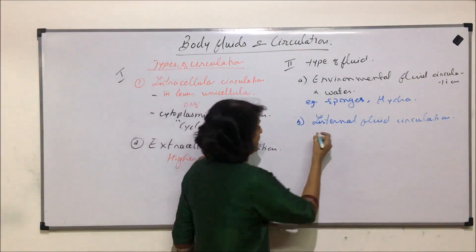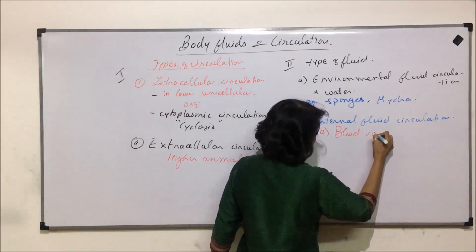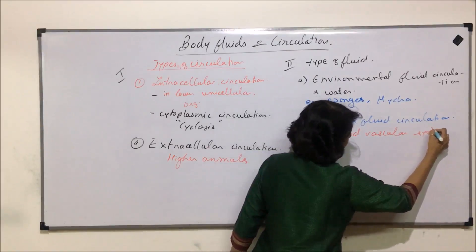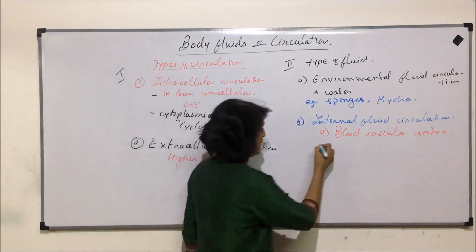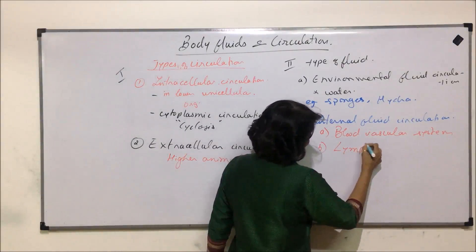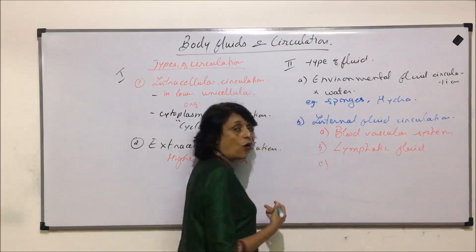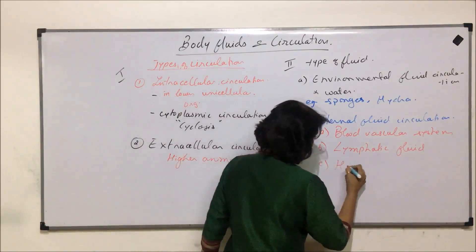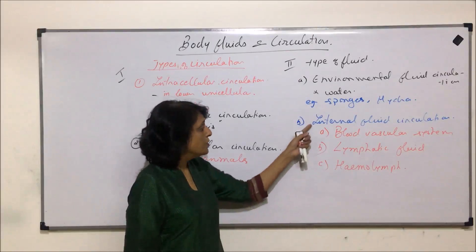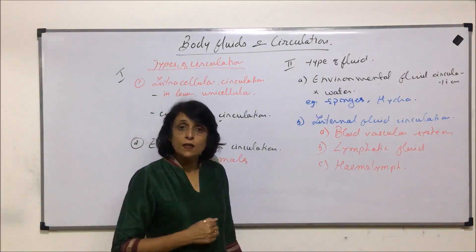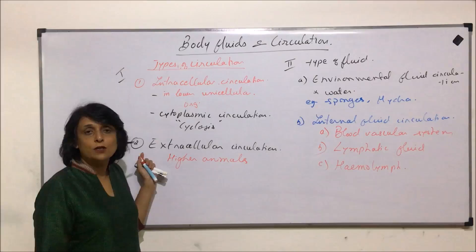The second type is internal fluid circulation — that means there is some fluid inside the body doing this job. Here we will have two or three categories: blood vascular system, where blood is responsible for transport of gases and absorbed material; then there can be lymphatic system or lymphatic fluid; and we can also include hemolymph, which is seen in insects like cockroaches.